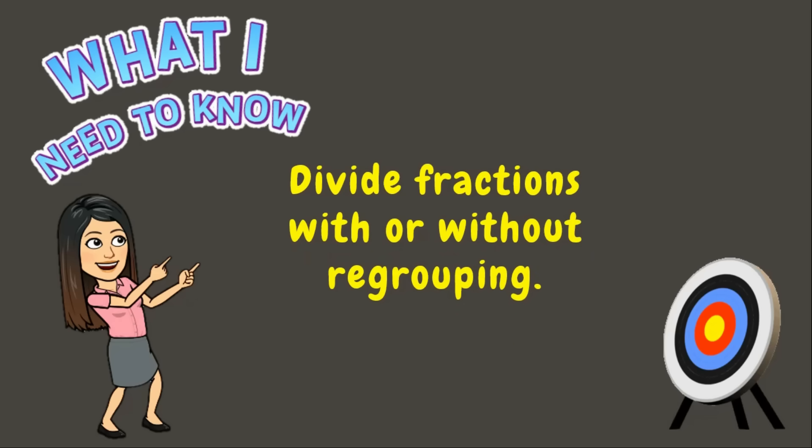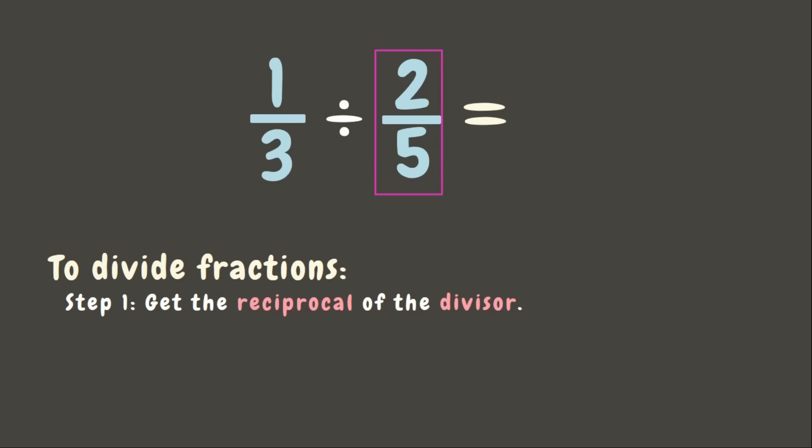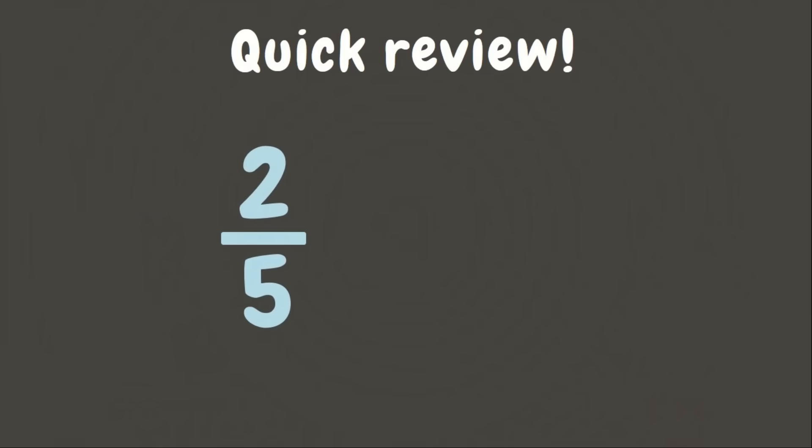Let's try this first example: one-third divided by two-fifths. To divide fractions, first step is to get the reciprocal of the divisor or the second fraction. But how are we going to get the reciprocal of a fraction? Let's have a quick review. To get the reciprocal of a fraction, we just simply switch the position of the numerator and the denominator.